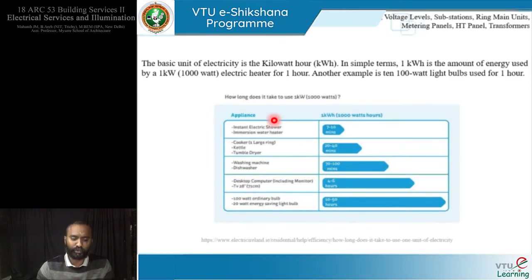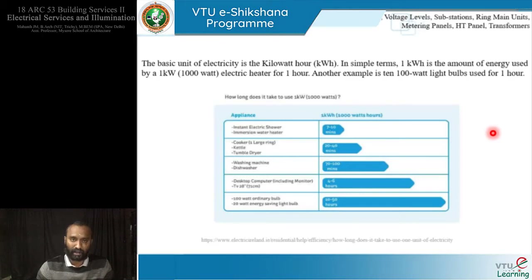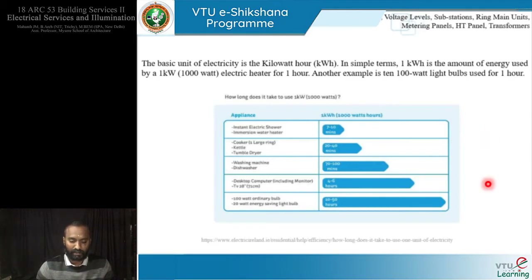How long does it take to use one kilowatt hour for various appliances? An instant electric shower or immersion water heater takes 10 minutes maximum to achieve this one kilowatt hour. A cooker, kettle, and tumble dryers take 40 minutes maximum. A washing machine and dishwasher take 100 minutes. A desktop computer including monitor takes 6 hours maximum. A 1000-watt ordinary bulb or 20-watt LED bulb takes 50 hours for achieving the same. This is roughly to give an idea about the one kilowatt hour that the government is going to charge us for.